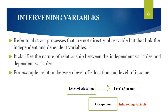Now, let us see what are intervening variables. Intervening variables refer to abstract processes that are not directly observable but that can link the independent variables and dependent variables. In many types of behavioral research, the relationship between independent and dependent variables is not a simple one of stimulus to response. Certain variables that cannot be controlled or measured directly may have an important effect on the outcome — these modifying variables intervene between the cause and the effect.